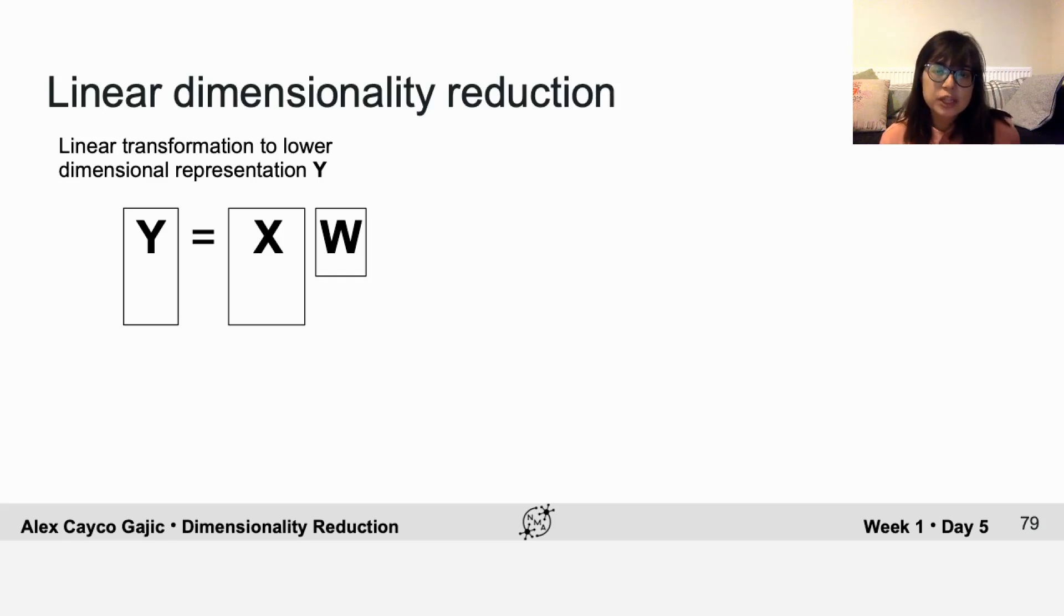PCA is an example of linear dimensionality reduction. That means it finds a linear transformation to a low dimensional representation. There are many such linear dimensionality reduction methods and they differ in terms of the assumptions that they make on the data.